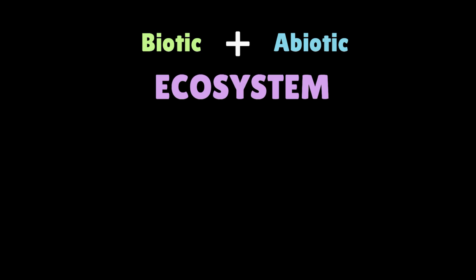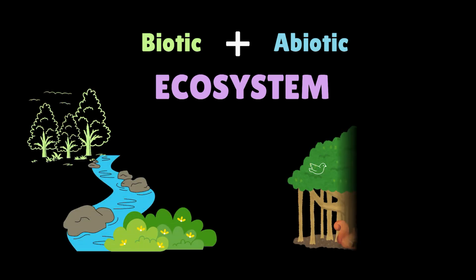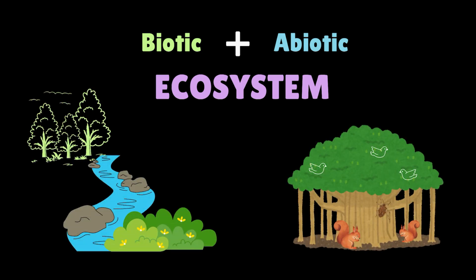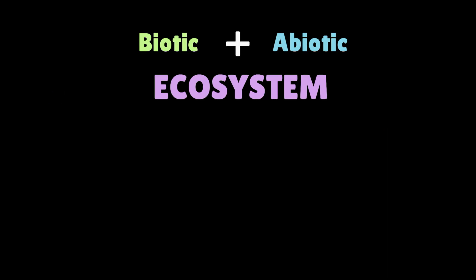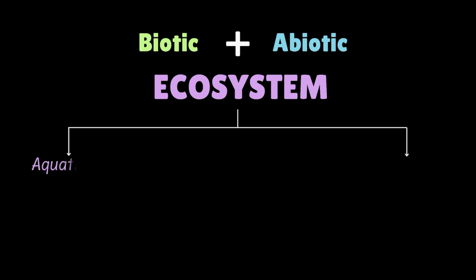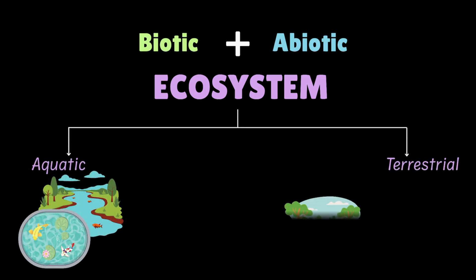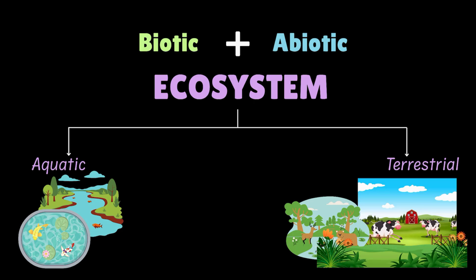Ecosystems can be large, like a forest, river, or grassland, or quite small, like a single banyan tree buzzing with birds, squirrels, and insects. When we talk about ecosystems, we broadly talk about the aquatic ecosystem — like ponds, rivers, and lakes — and the terrestrial ecosystem, like forests, grasslands, and farms. There are human-made ecosystems as well, like farmland or even a garden.